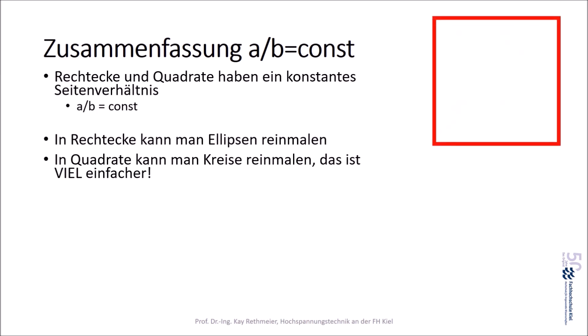Beispiel: hier haben wir ein Quadrat, das der zugehörige Innenkreis. Der Kreis kontaktiert oben, unten, links, rechts das Quadrat. Damit haben wir also ein Seitenverhältnis a zu b gleich konstant.